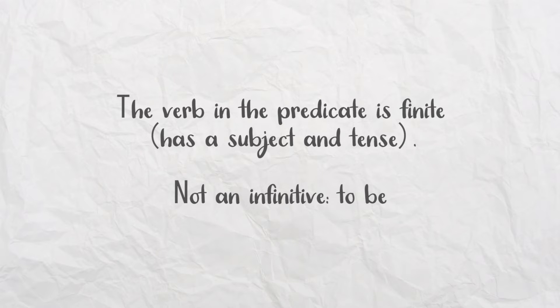What is finite? Finite means it's not an infinitive. For example, if I say 'to be,' that's not finite because it hasn't been constrained for subject and tense. So 'to be' is infinitive — the opposite of finite.